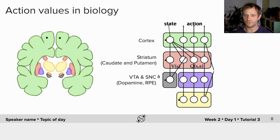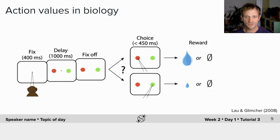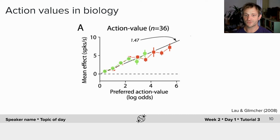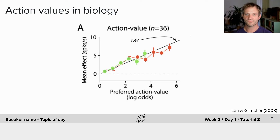Let's look at an example of what might be an action value neuron. In a study from Lau and Glimcher, a monkey had to choose between a red and a green dot on a screen, shifting their eyes to look at it and then receiving a reward — either large or small, with some probability. In blocks, these contingencies changed, so the animal had to continually learn. If you estimate the animal's preference and expected action value, you find that spike rates in oculomotor caudate neurons almost linearly reflect the action values.